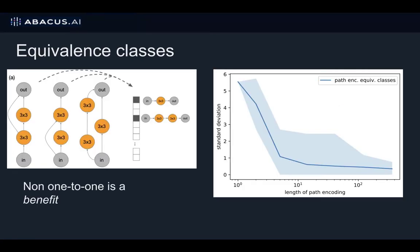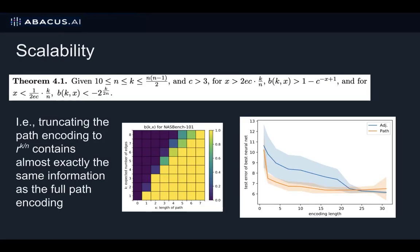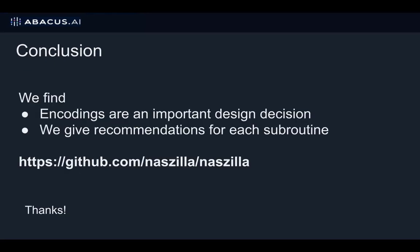Now I'll briefly mention the rest of our results. For the path-based encodings, not being one-to-one can actually be a benefit since architectures with the same encoding tend to have very similar accuracies. Finally, we theoretically and empirically show that the path-based encodings scale better than the adjacency matrix-based encodings. Overall, we find that encodings are an important design decision for NAS, and we give recommendations for what encodings to use for which subroutine.